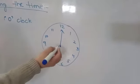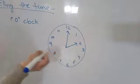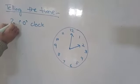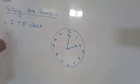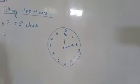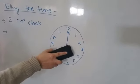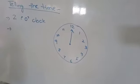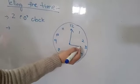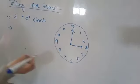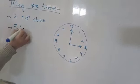For example, if small hand is on two, then it is two o'clock. Similarly, if small hand is on three, then it is three o'clock, right on, like this.